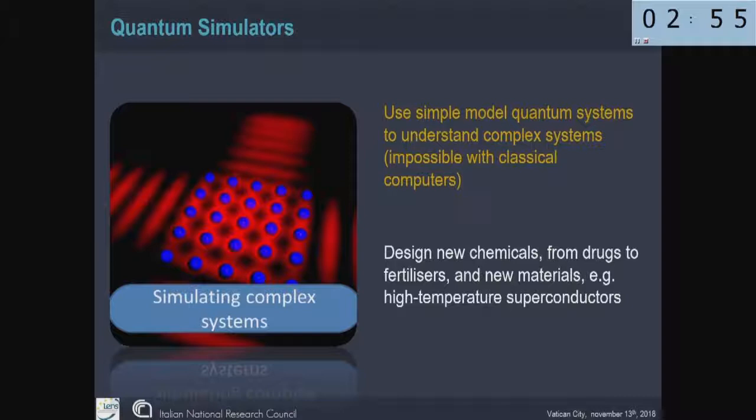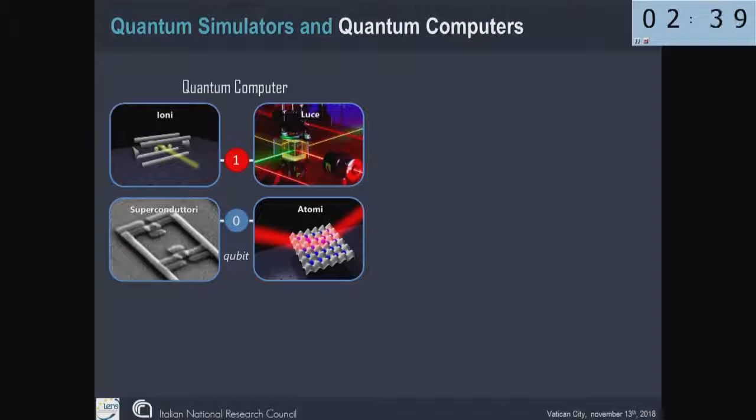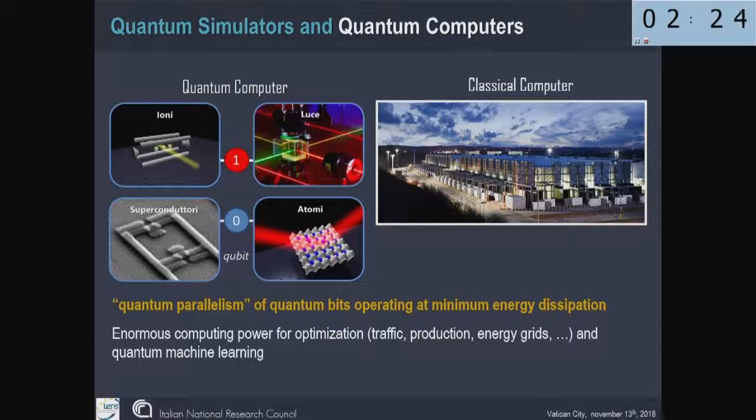So quantum simulation can be used to design new chemicals and new drugs, fertilizers, new materials, high temperature superconductors, for instance. So these quantum simulators and quantum computers, on the left you see the scheme of the different approaches which are used all over the world, should be compared to the quantum parallelism where you have instead many computers working in parallel but with a minimum energy dissipation. The first great advantage of these quantum computers or quantum simulators is that you don't spread energy. And this can be used essentially for our life every day, even traffic, production, energy grids, or quantum machine learning.